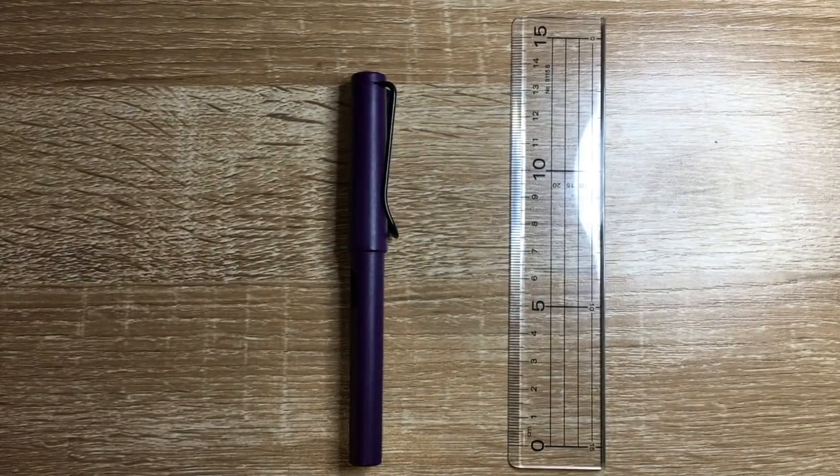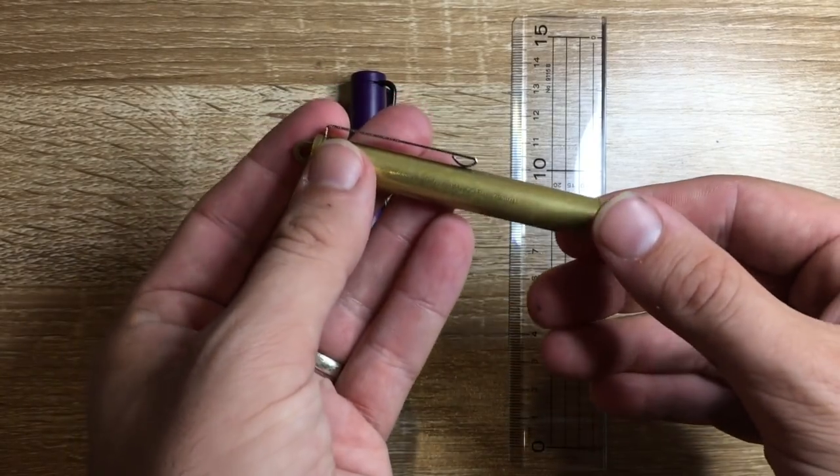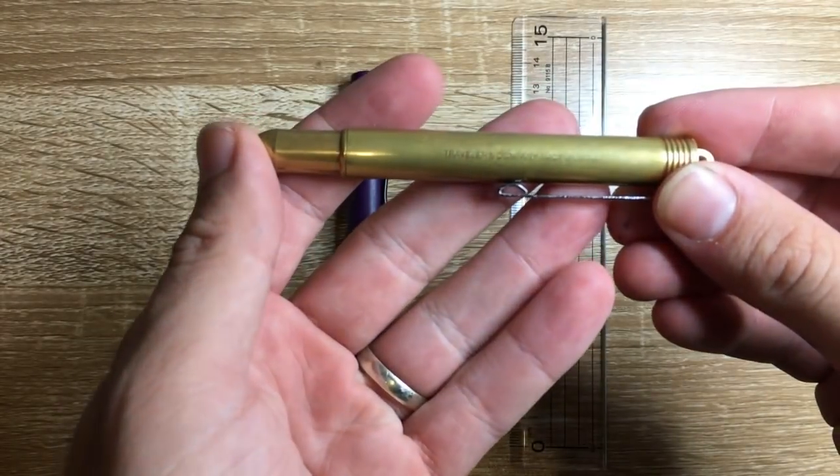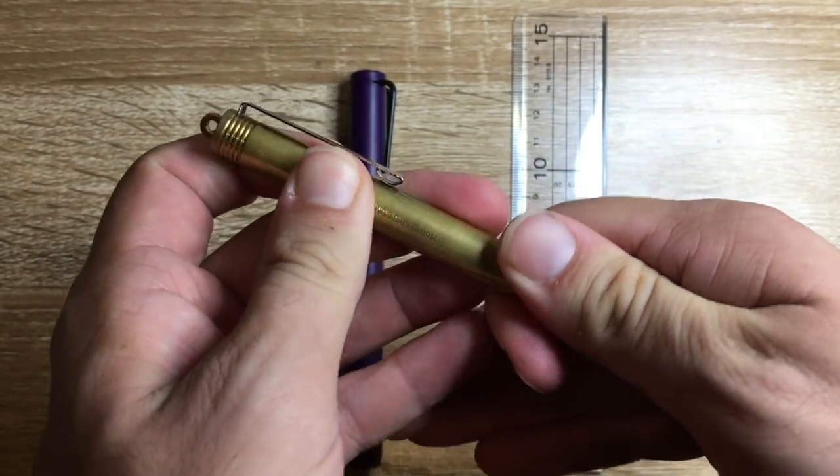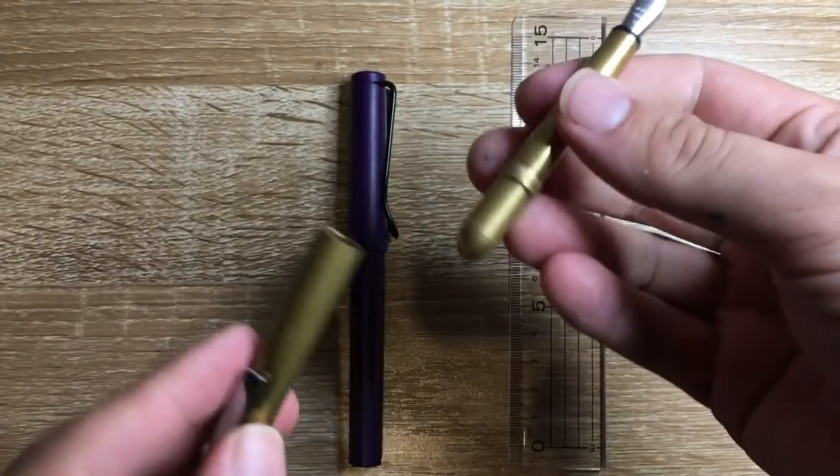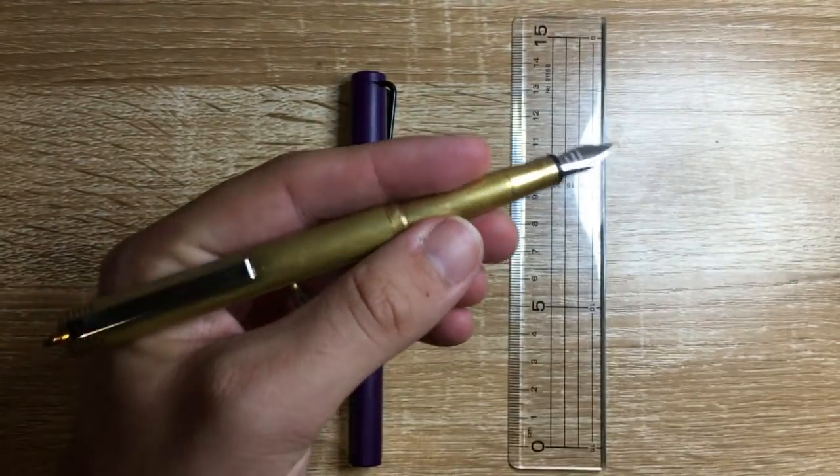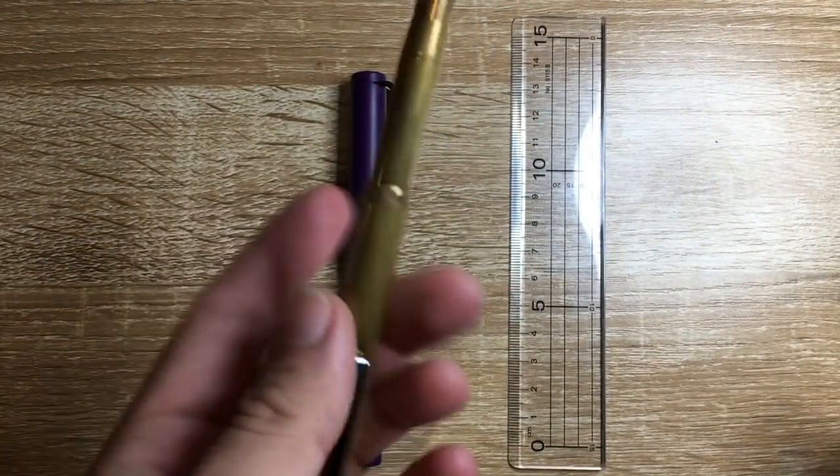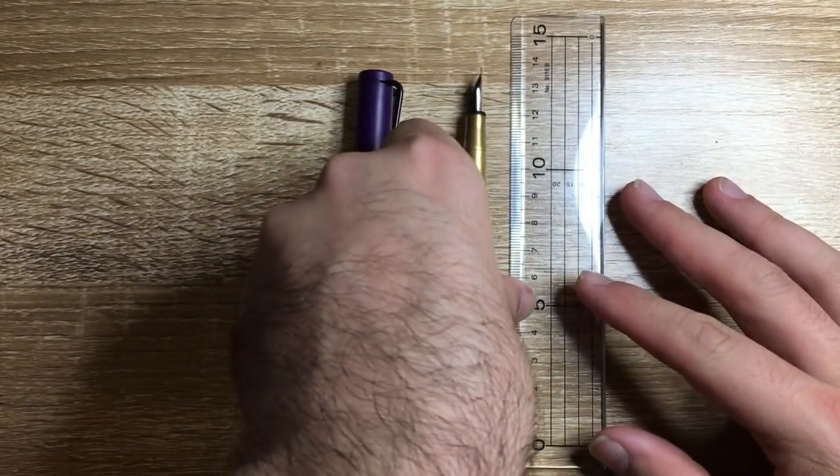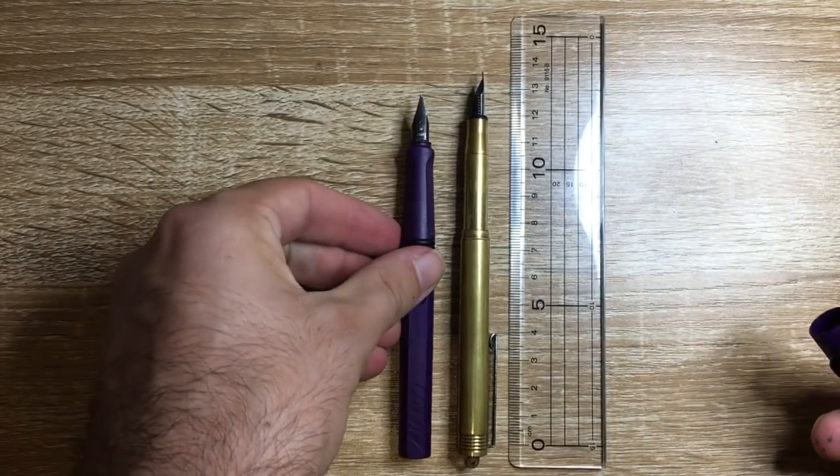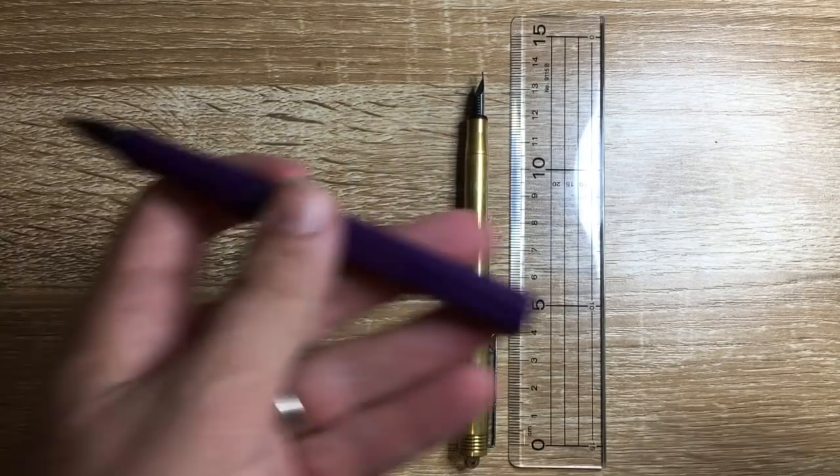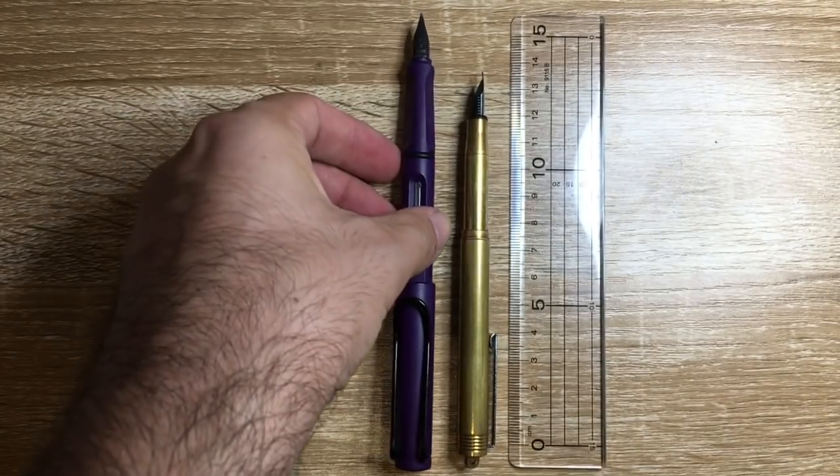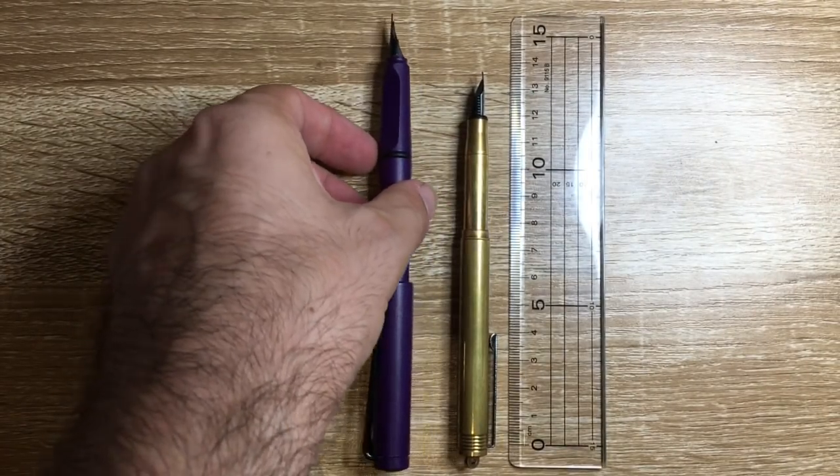Next is the Traveler's Company brass fountain pen. This has obviously got some patina on it. I've been using this on and off for about a little under a year. It's a very narrow pen, but when it's posted, it's a really good size. Once again, it becomes longer than the Lamy Safari in writing mode, although you can of course post the Lamy Safari, and it becomes quite long.